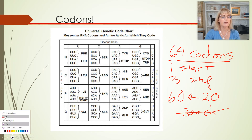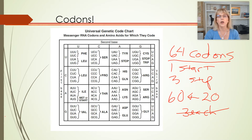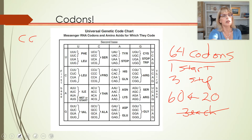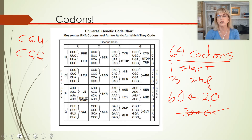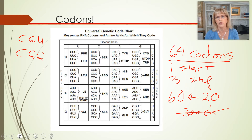So life makes it so that if a codon is supposed to say CGU but there's a mistake and instead it gets changed to CGG, it's still going to be an arginine. Protein's fine. Life is fine.